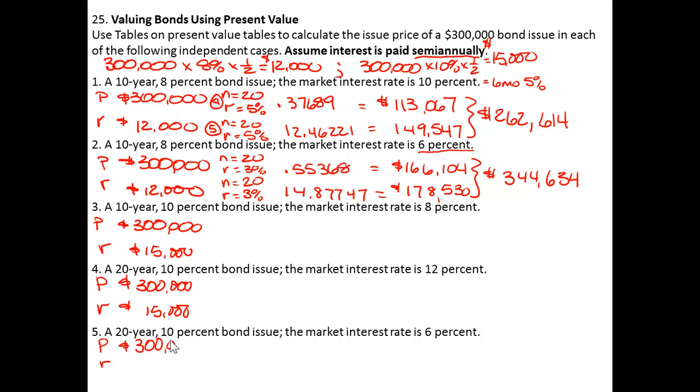Now if I go to my tables, because I know you're getting good at this, I can see that it's a 10 year bond, so my N is going to be 20. My interest rate is 8% a year, so it's going to be 4% for a half of the year. And notice the N and the R values are the same, it's just we're going to use Table 4 for the single sum of the bond and Table 5 for those 20 checks of $15,000.